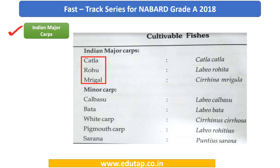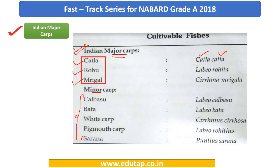Next is an important snapshot of Indian major carps. The three important Indian major carps are Katla, Rohu, and Mrigal. Make sure you revise these names and also be aware of their scientific names. There is also a list of minor carps: Kalbasu, Bata, White Carp, Big Mouth Carp, and Sarana. You need to know their scientific names as well — for example, Rohu corresponds to Labeo rohita, so you should be able to match common names to scientific names.